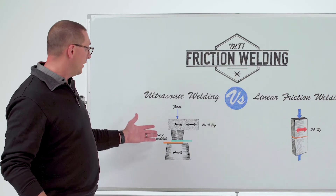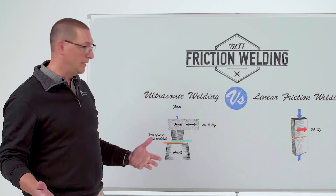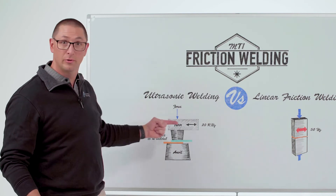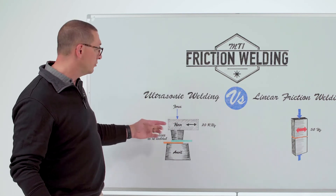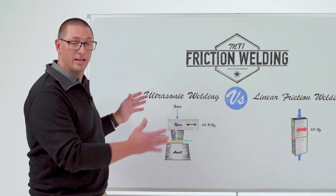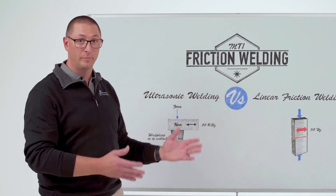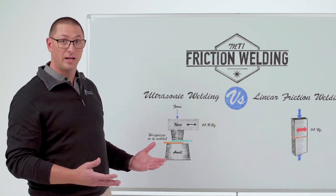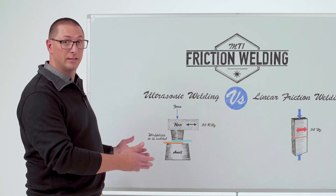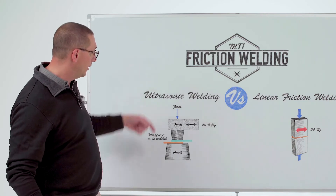In ultrasonic welding, we have a much smaller force — probably in the pounds range. We still have the oscillatory motion for relative motion, but now we're talking about kilohertz: 20,000 hertz versus 50 hertz. So there's a big difference from a surface velocity perspective, and the amplitude is significantly smaller, fractions of a millimeter, in order to make this weld.